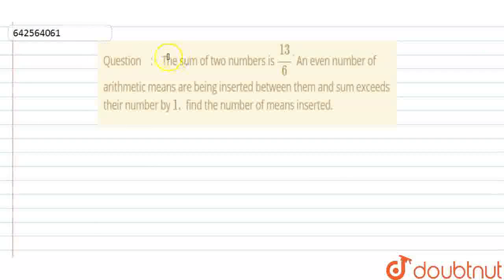Hello everyone, the question says that the sum of two numbers is 13 by 6 and even number of arithmetic means are being inserted between them and sum exceeds their number by 1. Find the number of means inserted.